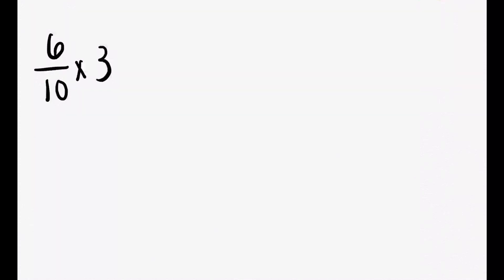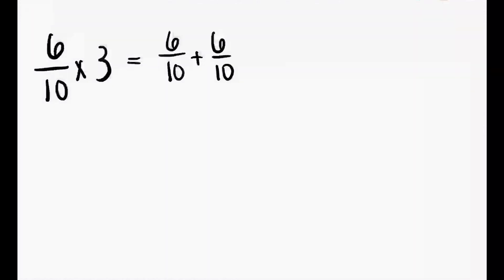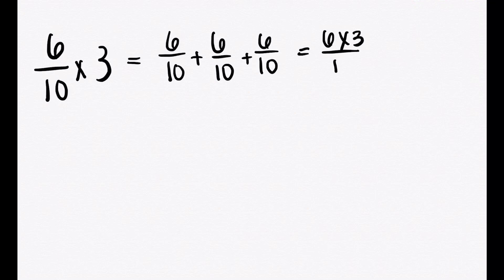That simply means 6 tenths 3 times: 1 time, 2 times, 3 times. Which means you can either do 6 plus 6 plus 6, or 6 times 3 over 10. We know 6 times 3 is 18, so it's 18 over 10.